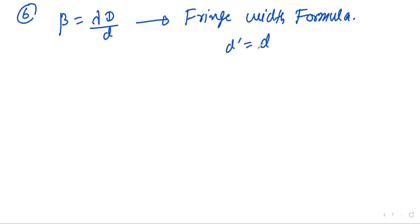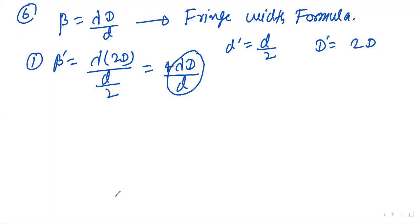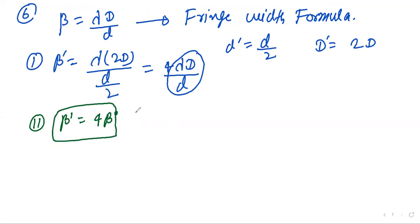The new slit separation d' = d/2 and new screen distance D' = 2D. The new fringe width β' = λ × 2D / (d/2) = 4λD/d = 4β. So the fringe width becomes four times the original.